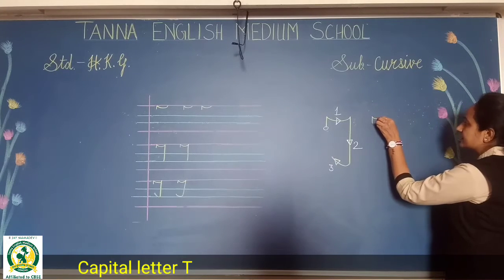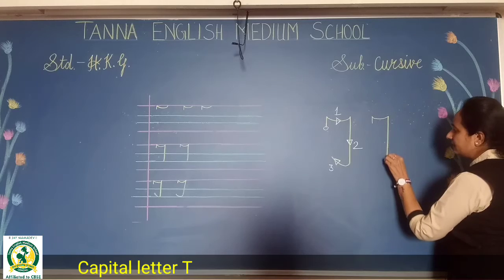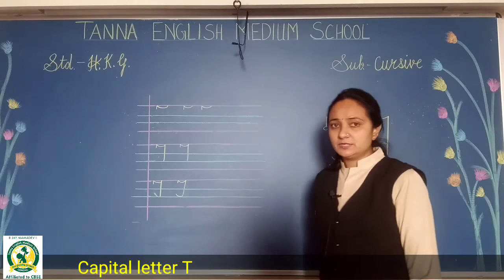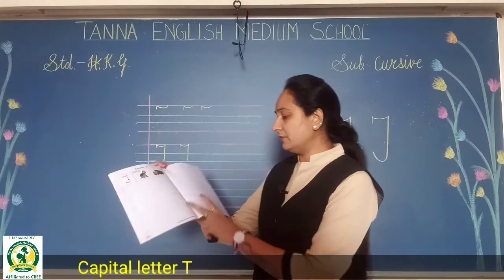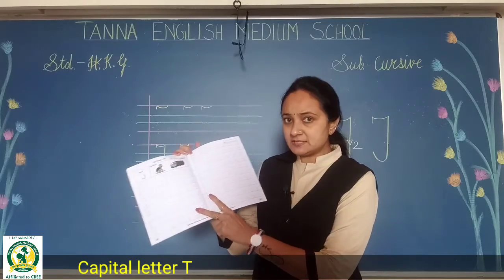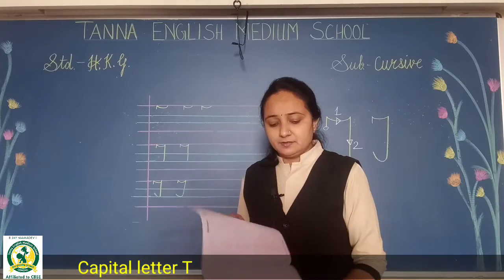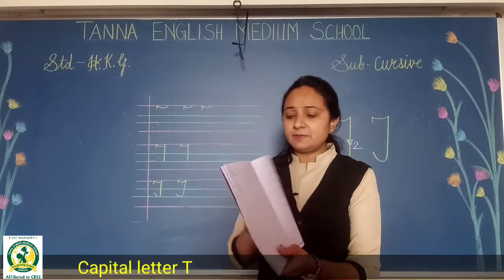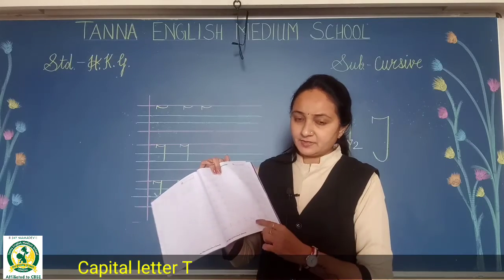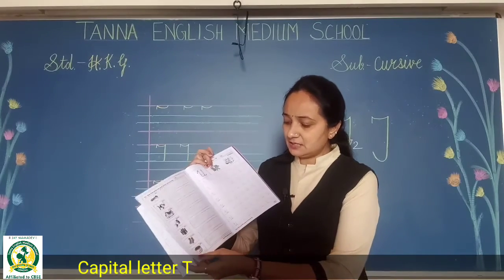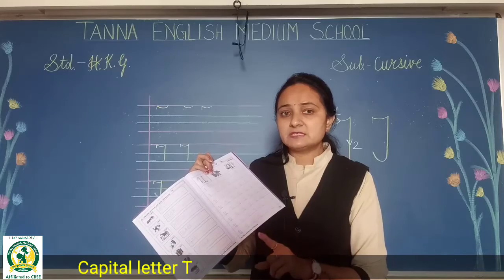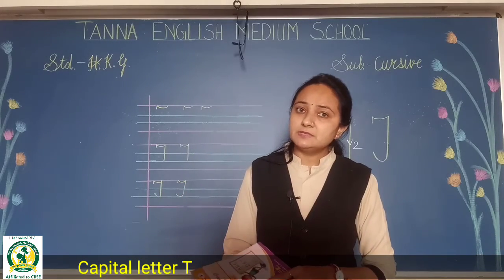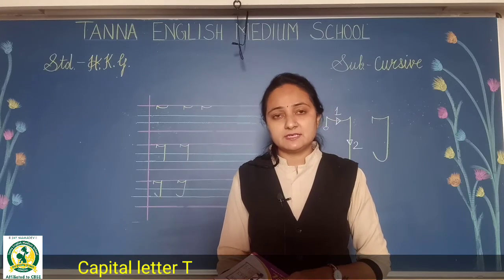Chhoti si line karke aise turn, straight line, and then like this — this is T. Students, you have to do tracing for two pages and the next page on your own. Page number 70 tak aapko karna hai, phir page number 71, and then page number 72 tak aapko complete karna hai. Please do it with very nice handwriting. Thank you.